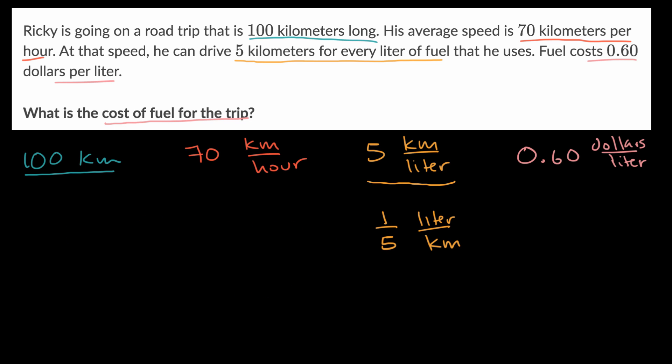And so why is that useful? Well, if I take 100 kilometers and multiply it times one-fifth of a liter per kilometer, this is going to tell you that over the course of this trip, I am going to use 100 times one-fifth liters. Or over the course of the trip, we are going to use 20 liters.